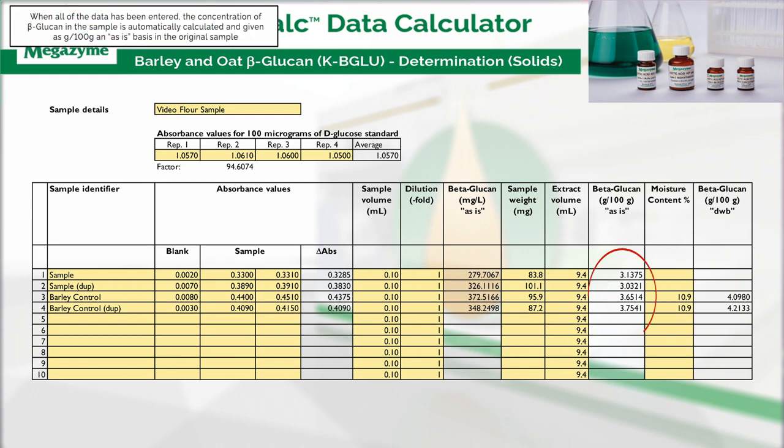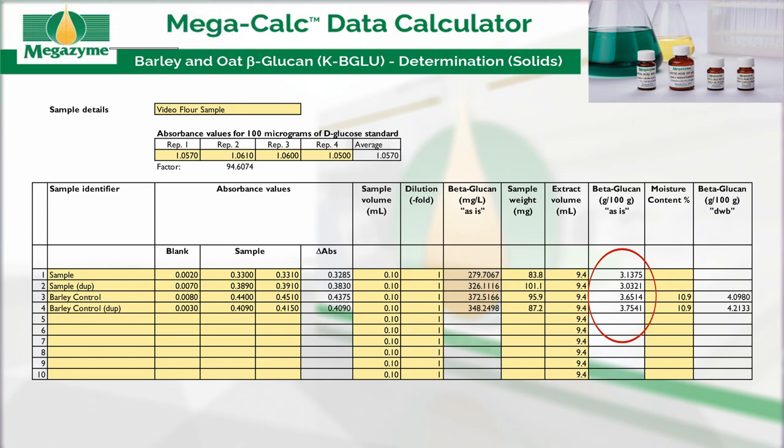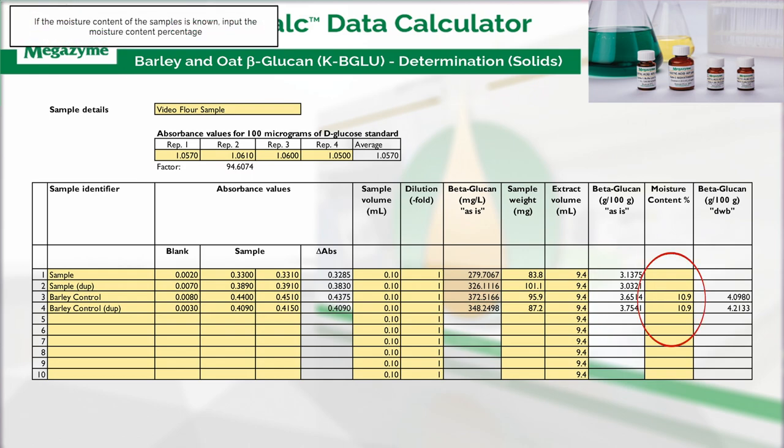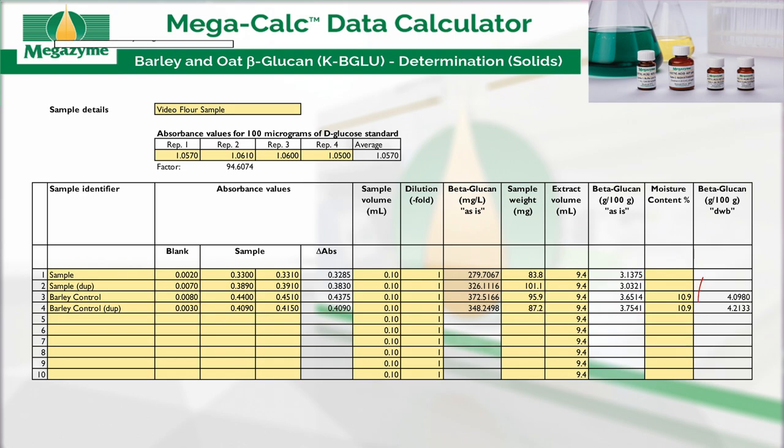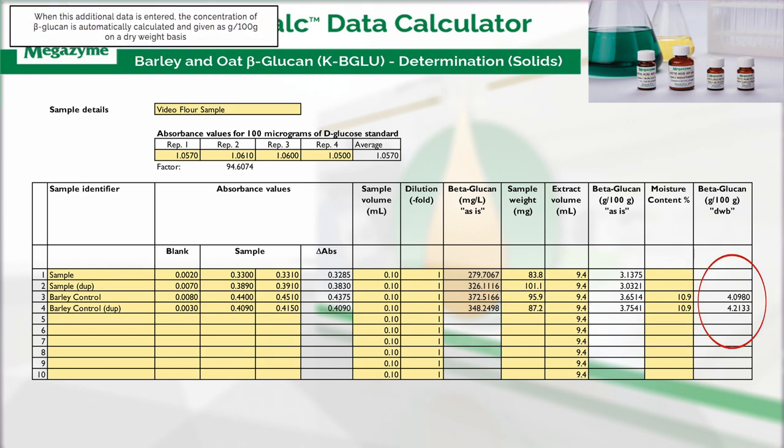When all of the data has been entered, the concentration of beta-glucan in the sample is automatically calculated and given as grams per 100 g on an as-is basis in the original sample. If the moisture content of the samples is known, input the moisture content percentage. When this additional data is entered, the concentration of beta-glucan is automatically calculated and given as grams per 100 g on a dry weight basis.